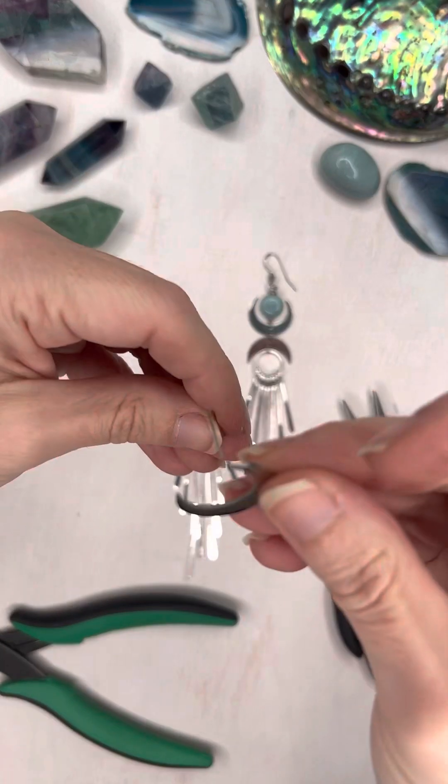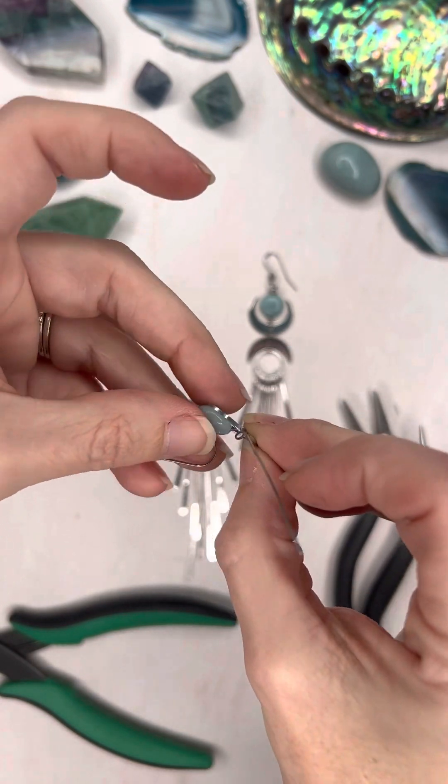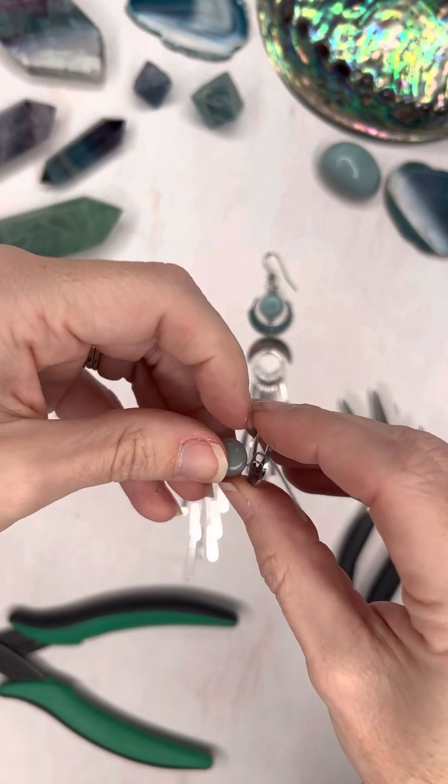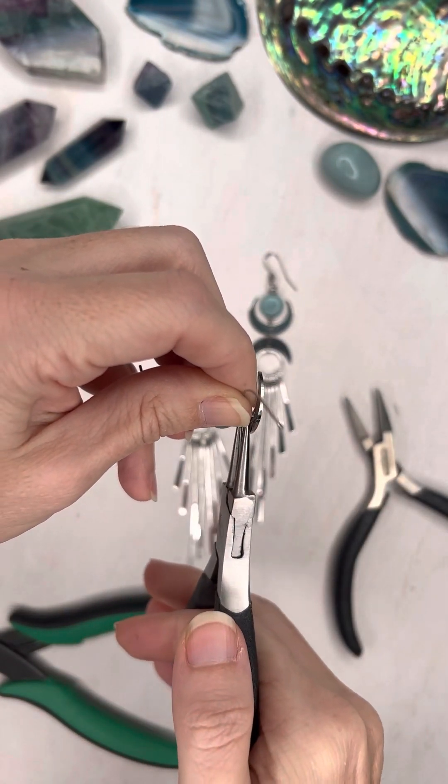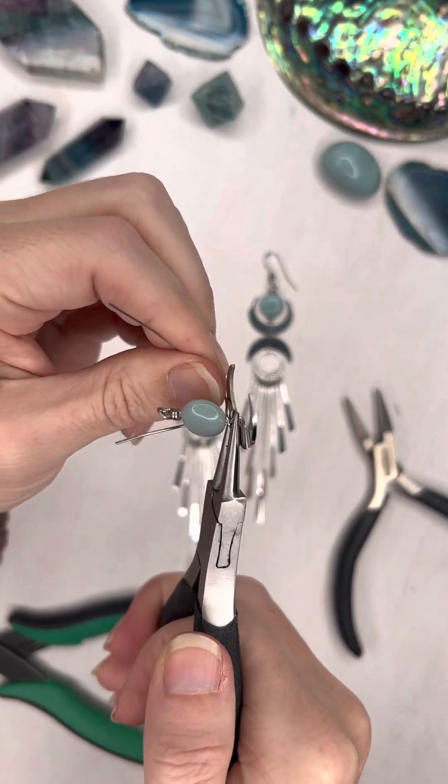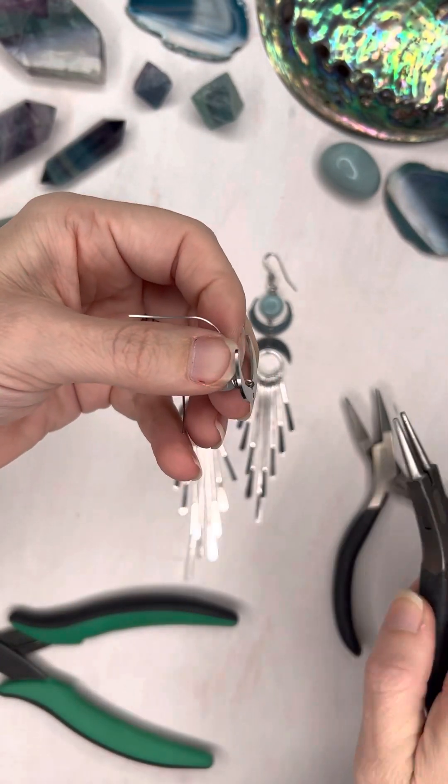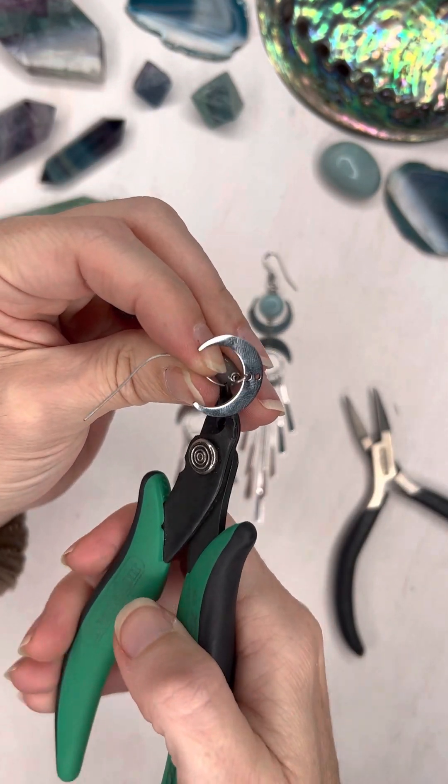And then I'm going to string on this moon. And then I'm going to twist it to the side so I can hold out my loop with my pliers. And I'm going to coil that around several times. Then I'm going to nip off the extra wire.